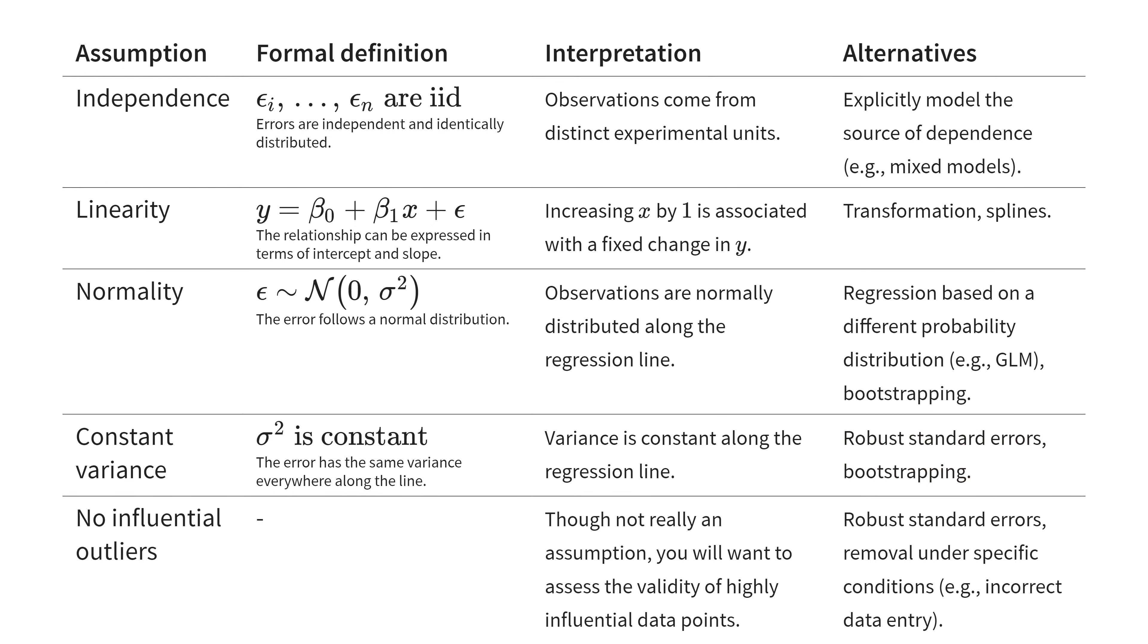Finally, outlyingness means how far an observation is removed from the rest. The idea being that if an observation is particularly far, it may have an undesirably large influence on the estimates. Now, this doesn't mean that outliers are always problematic. They could be real, valid observations.